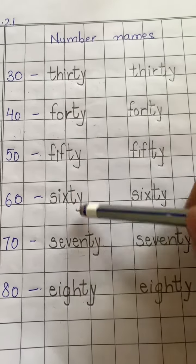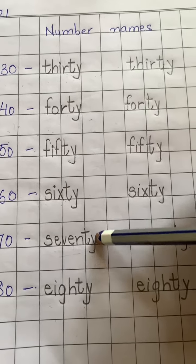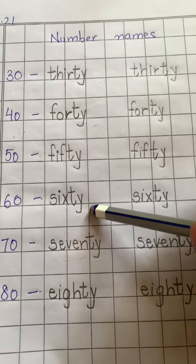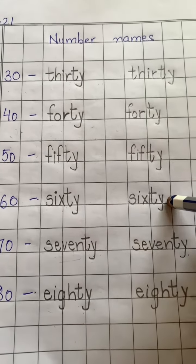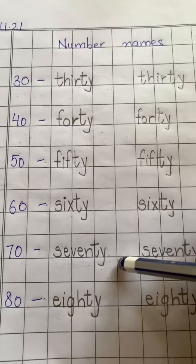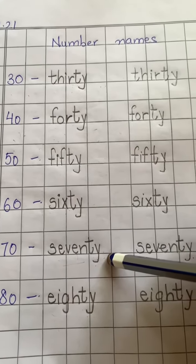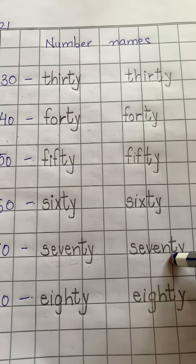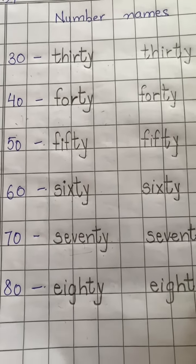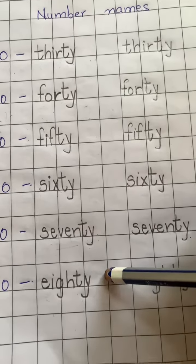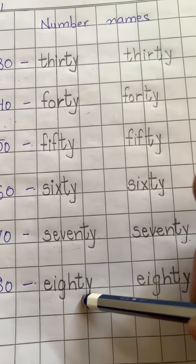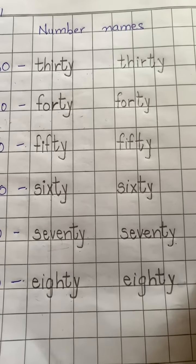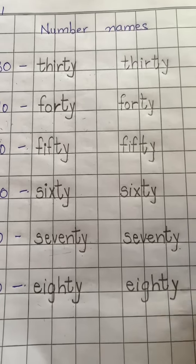In 60 and 70, you have to add only T-Y. 60 S-I-X-T-Y. 70 S-E-V-E-N-T-Y. In 80, you just add Y: E-I-G-H-T-Y. So learn and write number names.